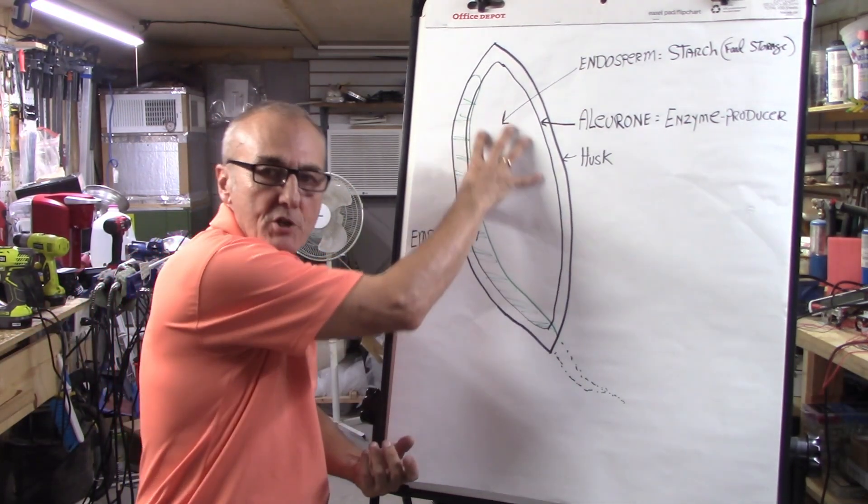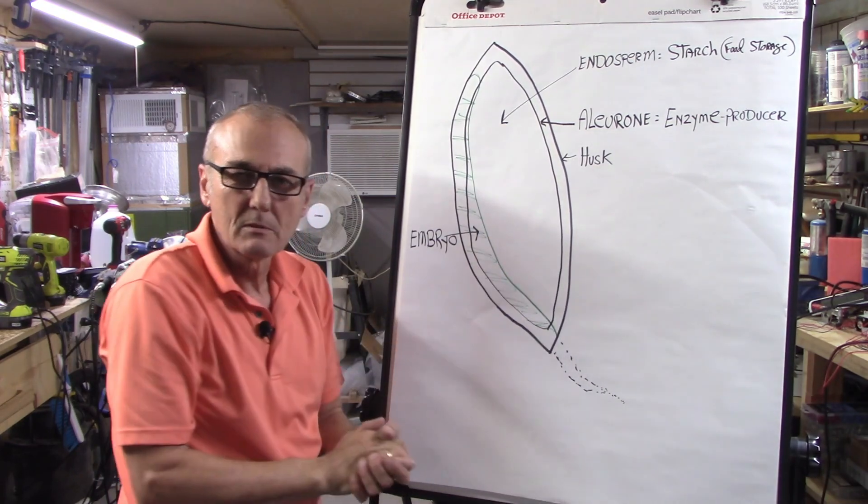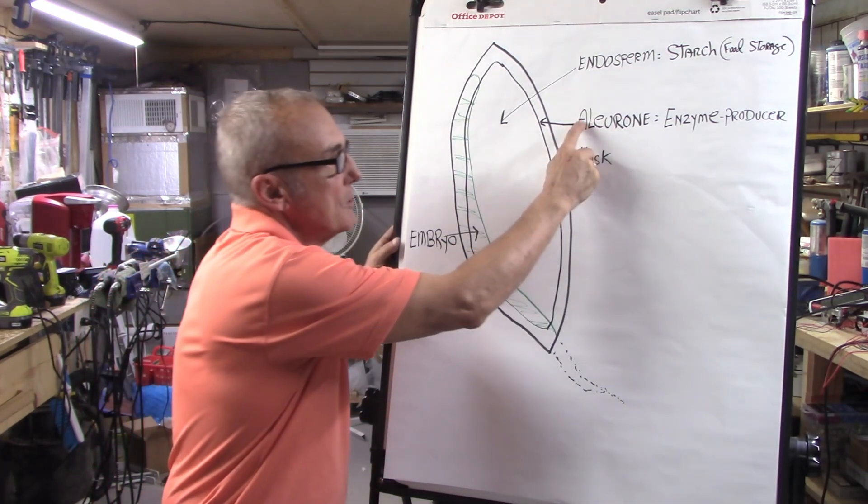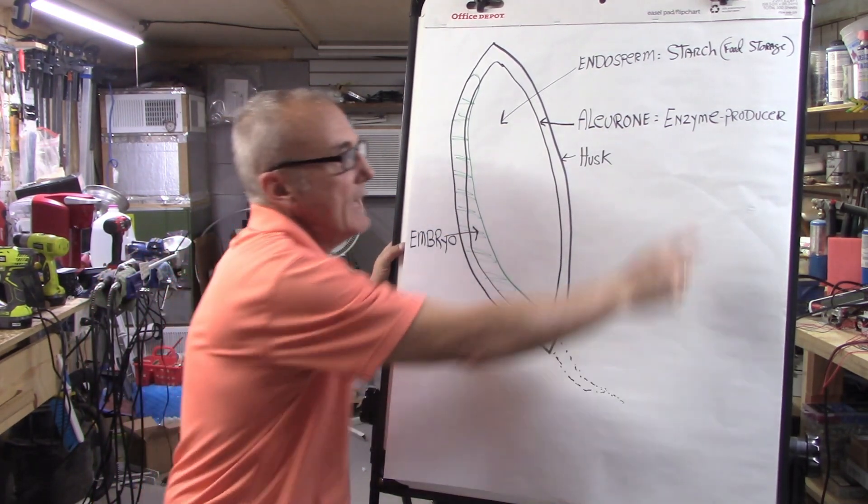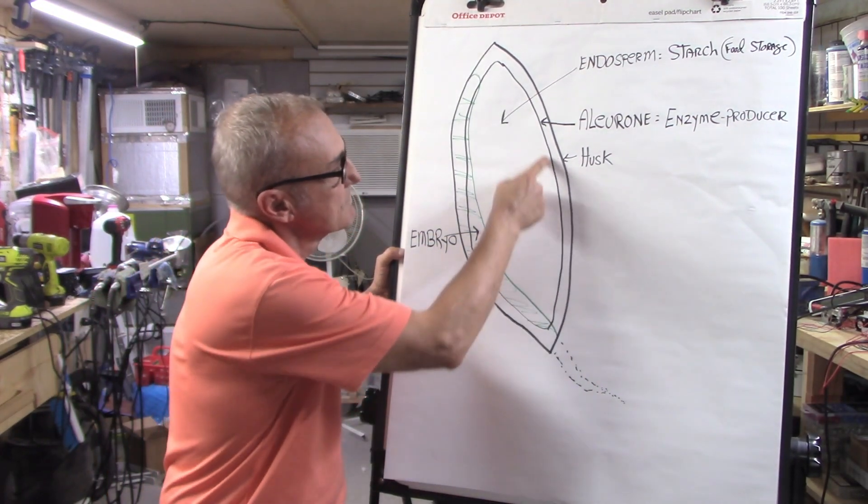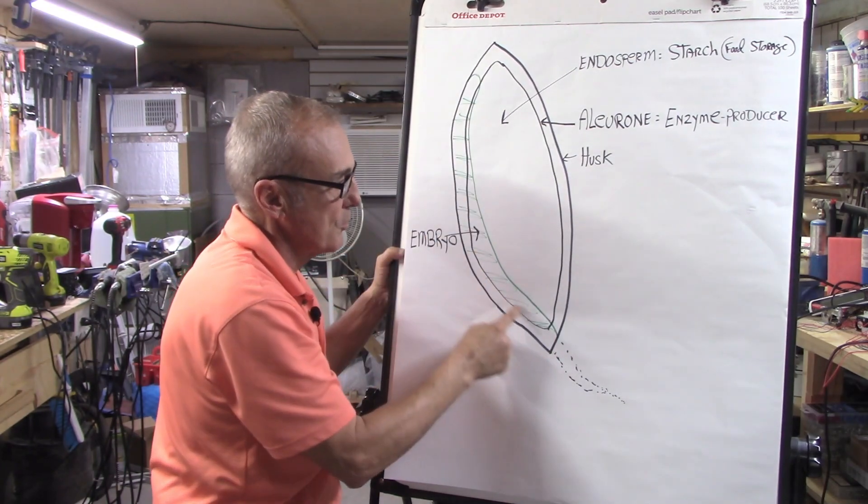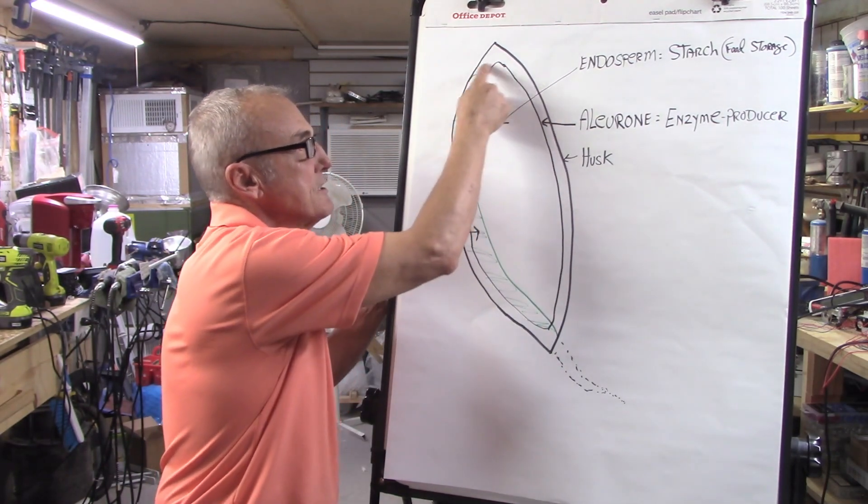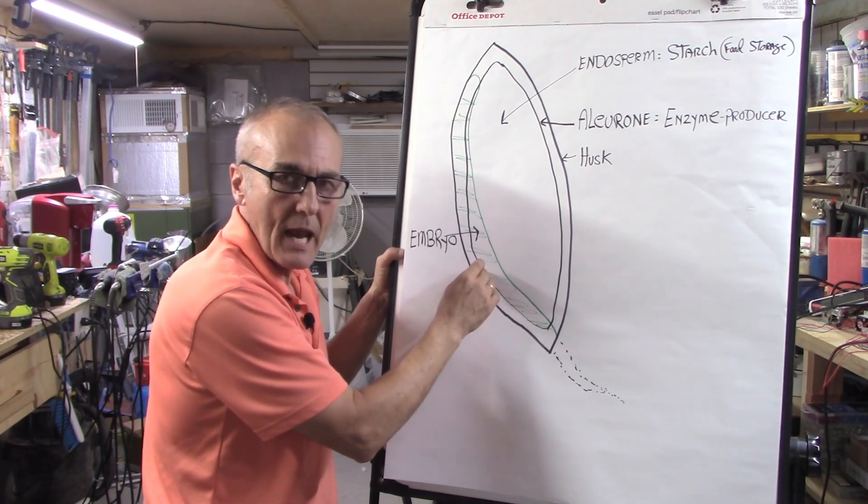So far so good. Well, this alurone is the enzyme producer. That's this cover that goes across the whole thing, and that's nothing more than a layer inside this seed grain.